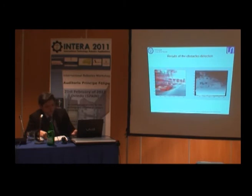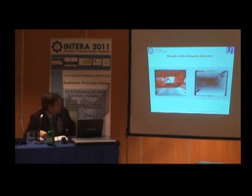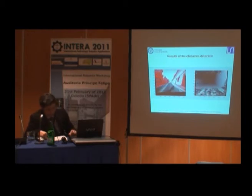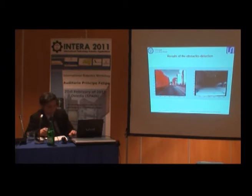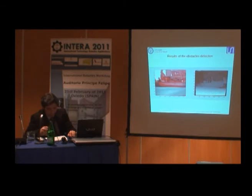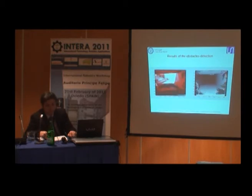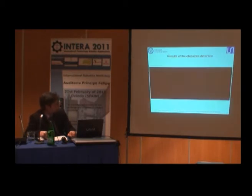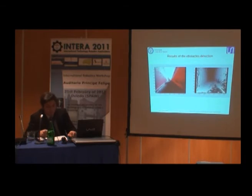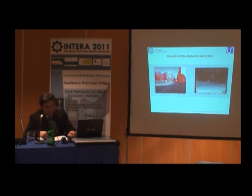Now we present several results of our obstacle detection system in urban environments. On the left, we have the visible image where the obstacles appear in red. And on the right, we have the corresponding disparity map. As we can see, the system can detect different kinds of obstacles such as other vehicles, buildings, or trees. We also can detect obstacles on both sides, and even if the road has a steep slope or a sharp bend, we continue detecting the obstacles.